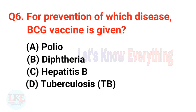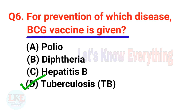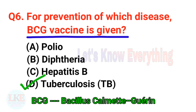Question number six: for prevention of which disease is the BCG vaccine given? A) Polio, B) Diphtheria, C) Hepatitis B, D) Tuberculosis (TB). The right answer is option D, tuberculosis. BCG stands for Bacillus Calmette-Guérin.